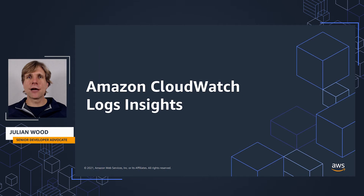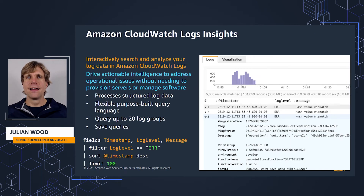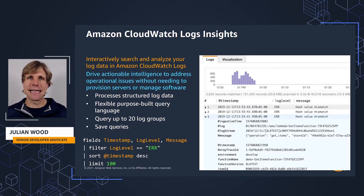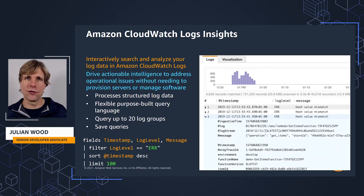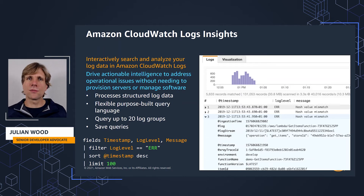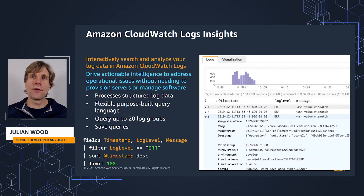Time now to look at Amazon CloudWatch Logs Insights, which is a super useful part of CloudWatch Logs. CloudWatch Logs Insights is an interactive log analytics capability for CloudWatch Logs. This allows you to search for and visualize data based on anything in structured logs, including metrics. You generate and run queries using a purpose-built language. You can query across up to 20 log groups and save queries for running again later. For this simple example, we may just want to see all errors — we would select the single Lambda function log group or a number of log groups and then run the query to see the results.